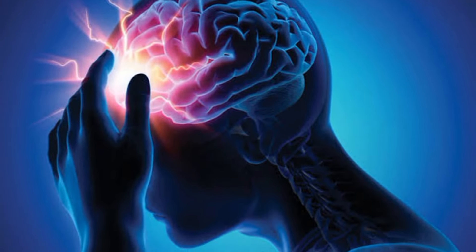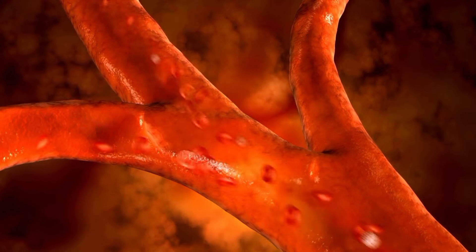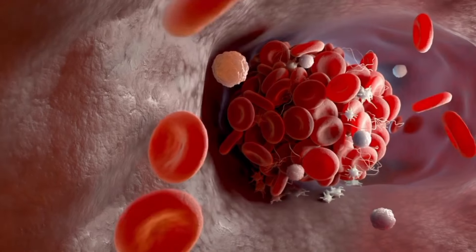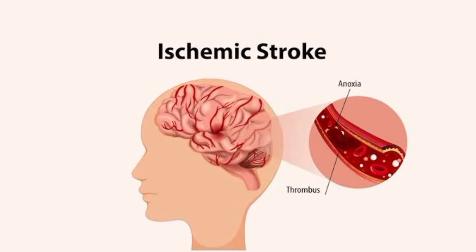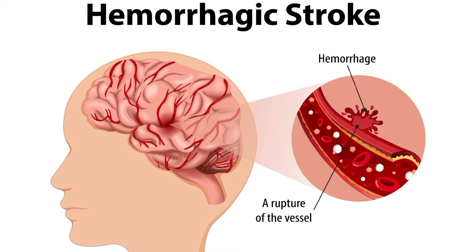What is a stroke? A stroke, a medical emergency, occurs when there's a disruption in the blood supply to the brain, leading to a sudden loss of brain function. This disruption can occur due to a blockage in a blood vessel (ischemic stroke) or bleeding within the brain (hemorrhagic stroke).